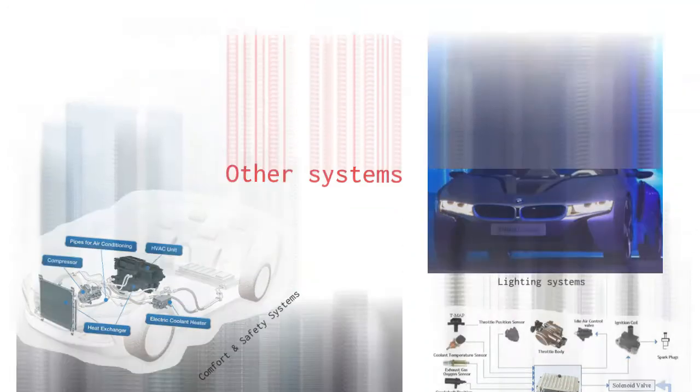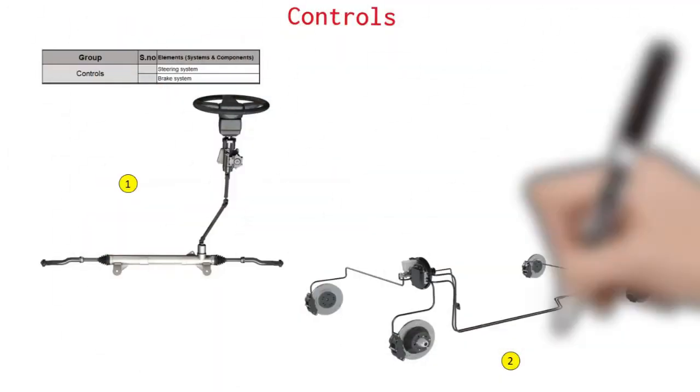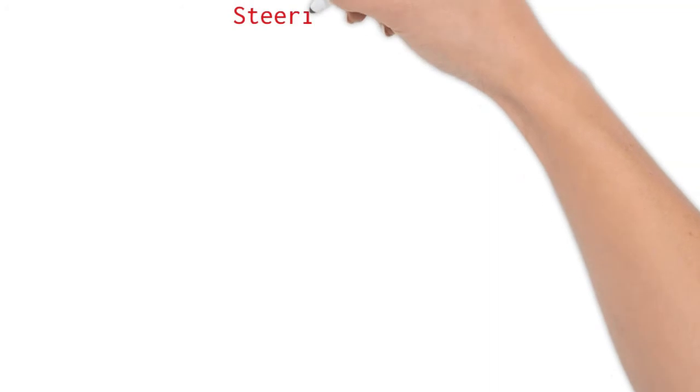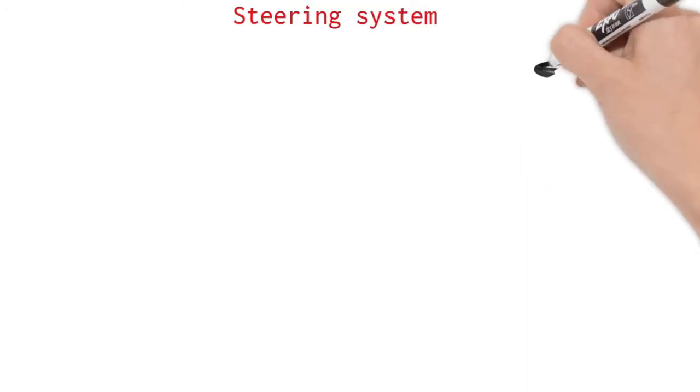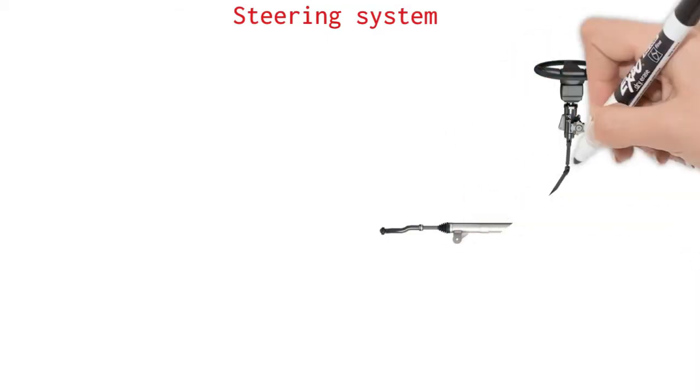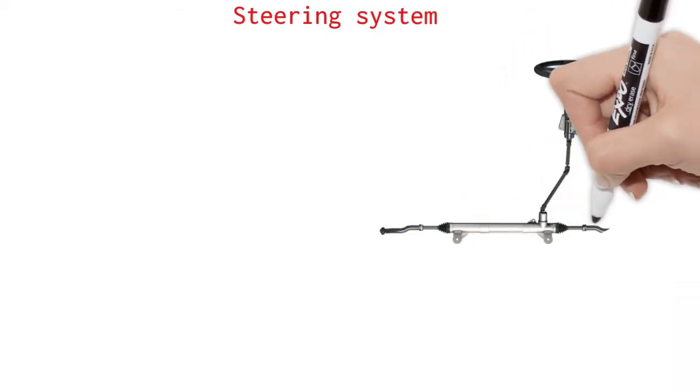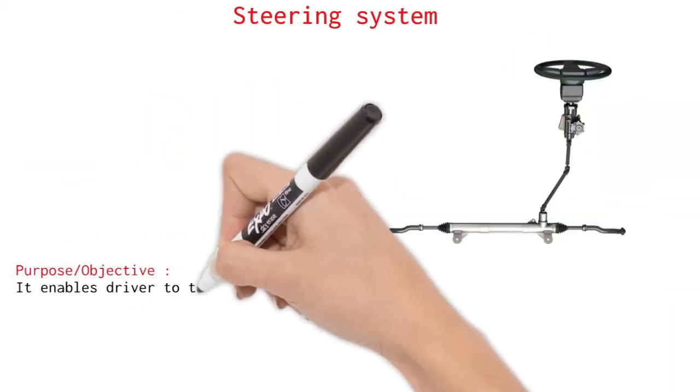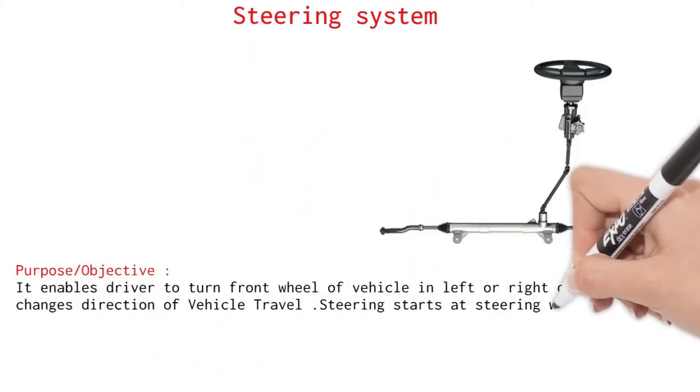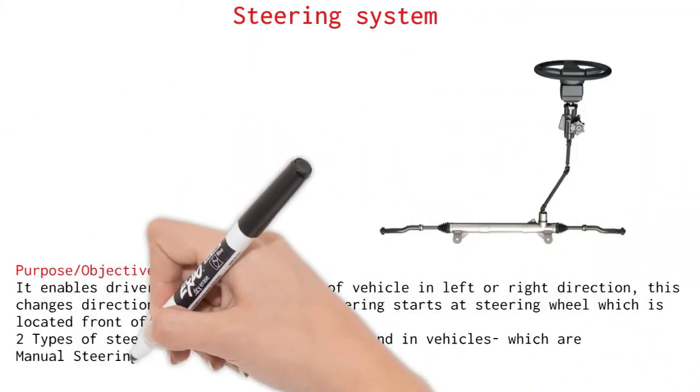The controls. The control consists of: Steering system. Steering system enables drivers to turn the front wheel of the vehicle in left or right direction. This changes direction of the vehicle travel. Steering starts at the steering wheel which is located in front of driver seat. Types of steering systems are commonly found in vehicles are manual steering and power steering.